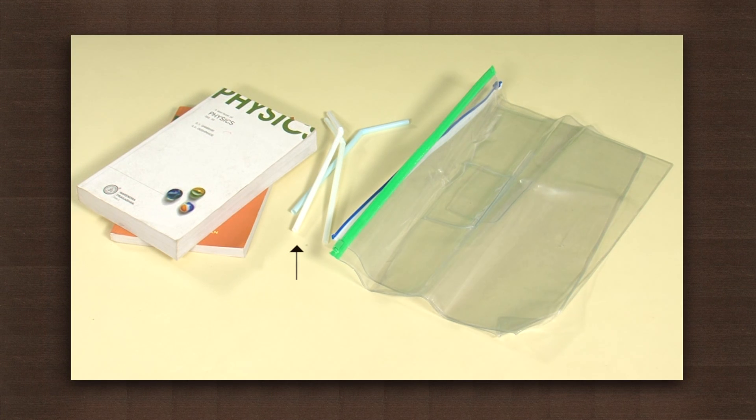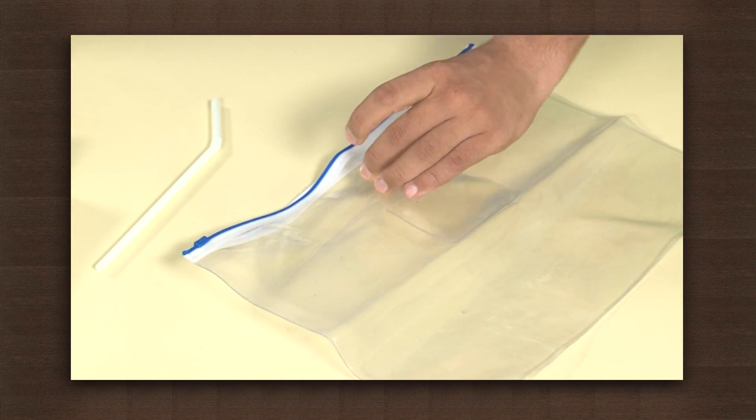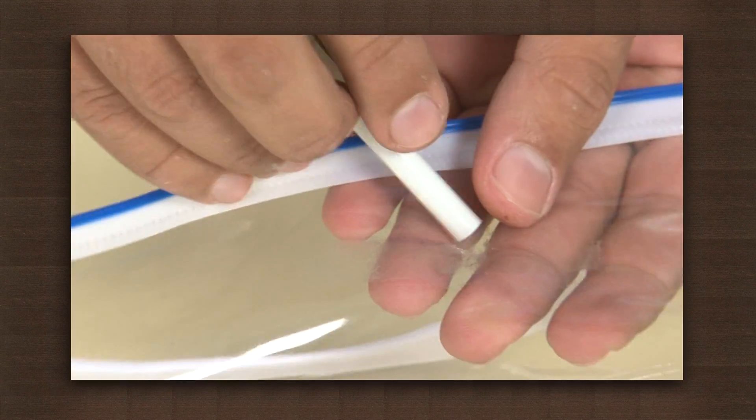Let's see. We will take a ziplock bag, a straw and books. Make a hole about an inch below the ziplock. Insert a straw through the hole.